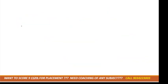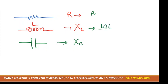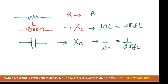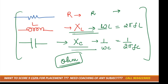So to summarize: if there is a resistor, we use resistance R; if there is an inductor, we use inductive reactance XL; and if there is a capacitor, we use capacitive reactance XC. Resistance unit is ohm, XL = ωL = 2πfL in ohm, and XC = 1/ωC = 1/(2πfC) in ohm. All three have the unit ohm.